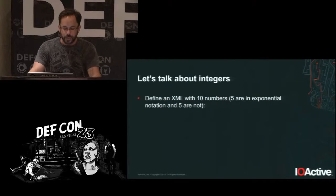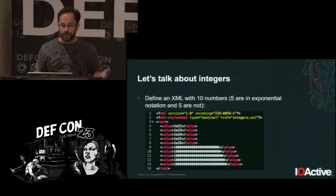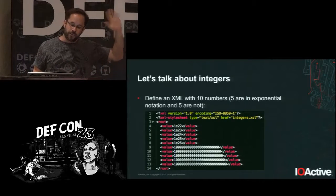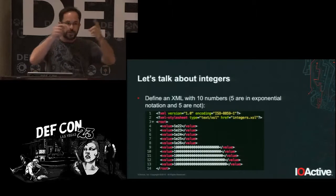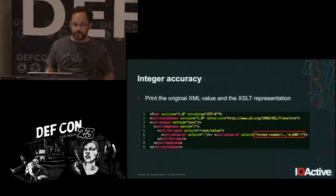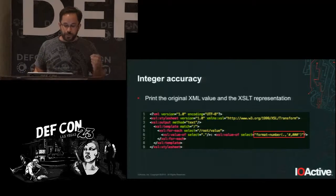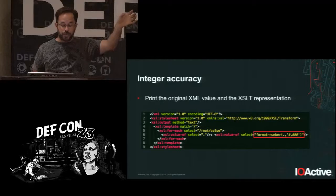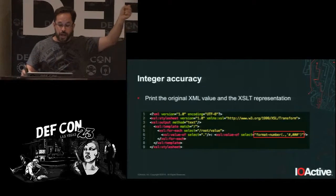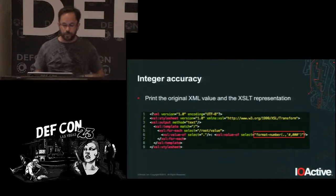Now let's talk about integers. I have an XML with ten numbers — five exponential numbers and the same five written out with the number one followed by zeros. Programming languages do not handle well numbers with more than sixteen digits due to precision. I tried to print and format those numbers with commas and periods for legibility.